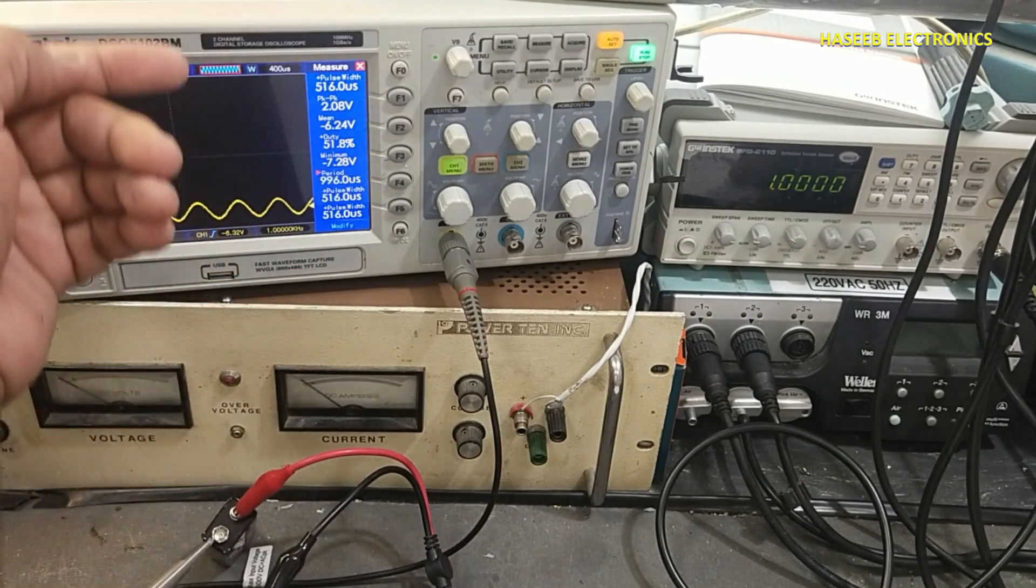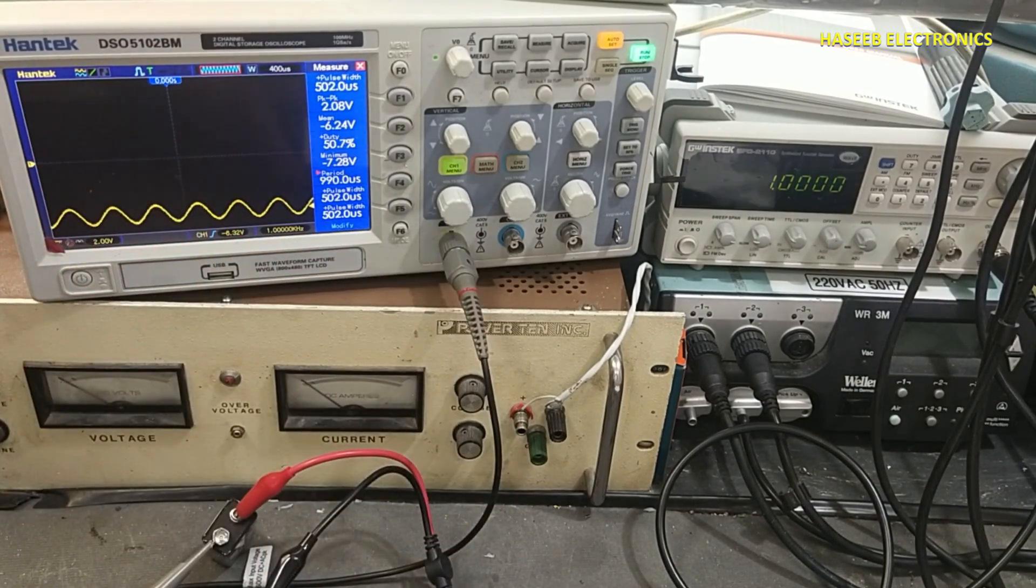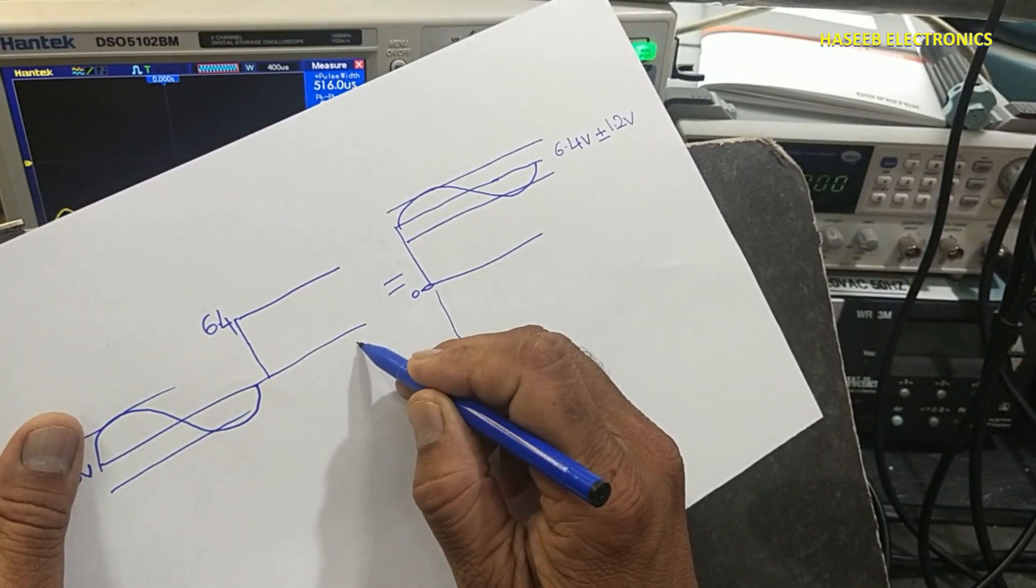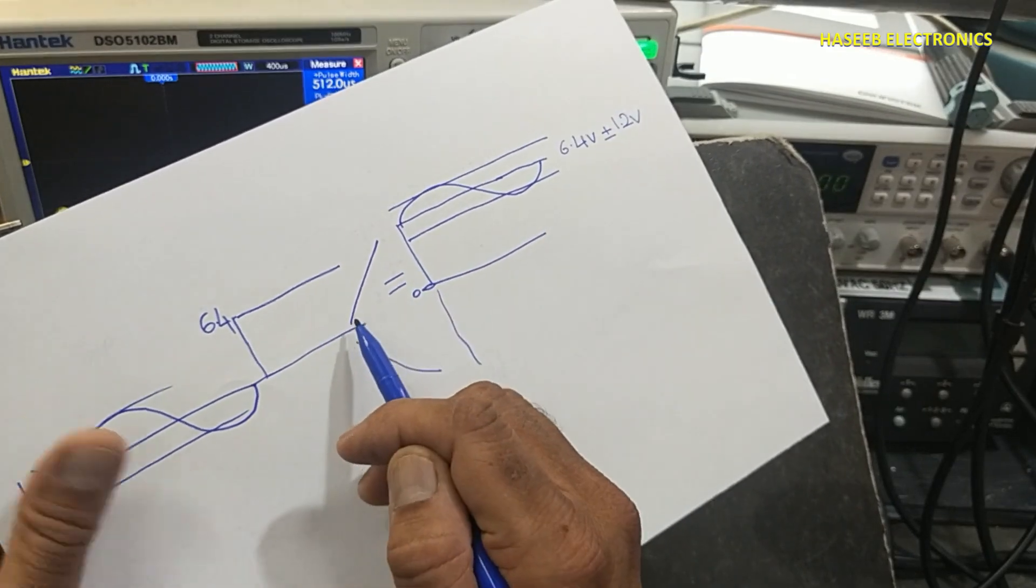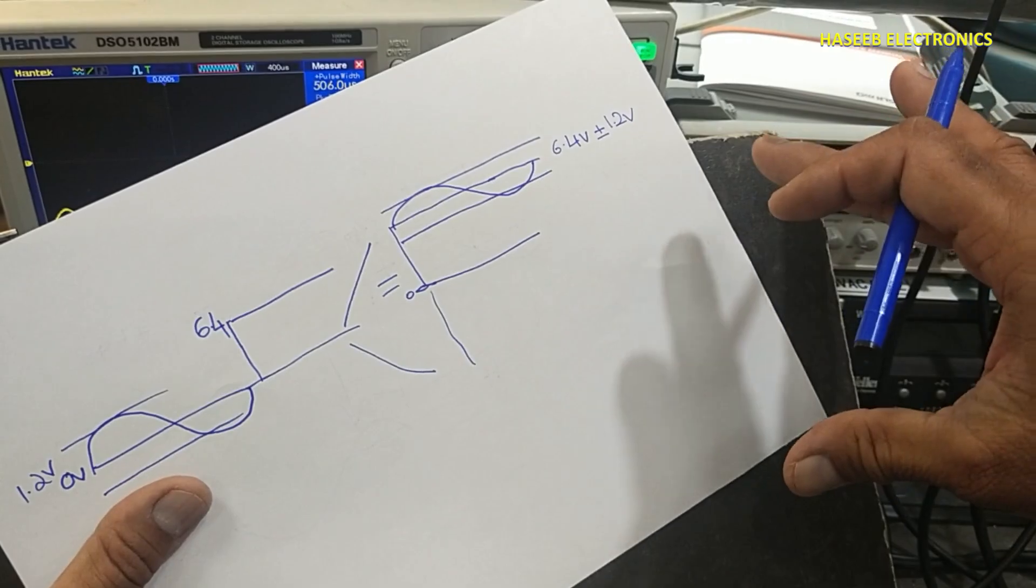If any signal is being displayed above the zero line, that is positive offset signal. Either the signal is here or here, if it is shifted from zero line, that signal has DC offset.